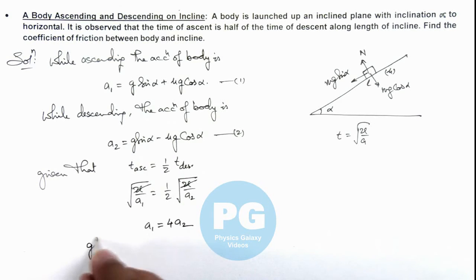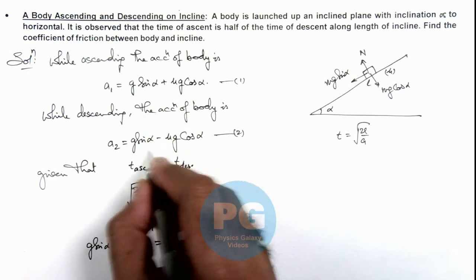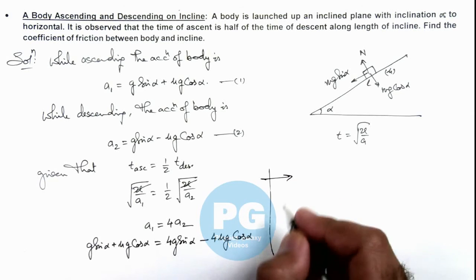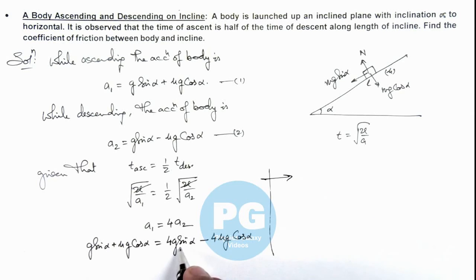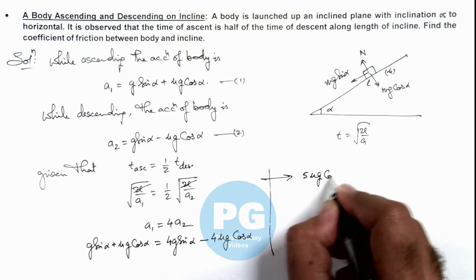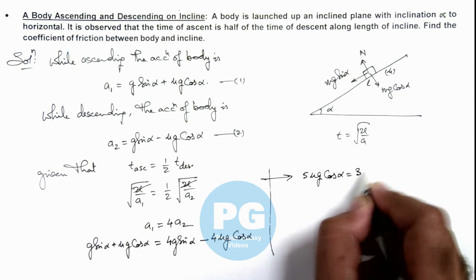Here it is g sine alpha plus mu g cos alpha is equal to—and this can be written as 4 times this a₂—this is 4g sine alpha minus 4 mu g cos alpha. So if we further simplify it over here, you can see this will give us 5 mu g cos alpha is equal to 3g sine alpha.